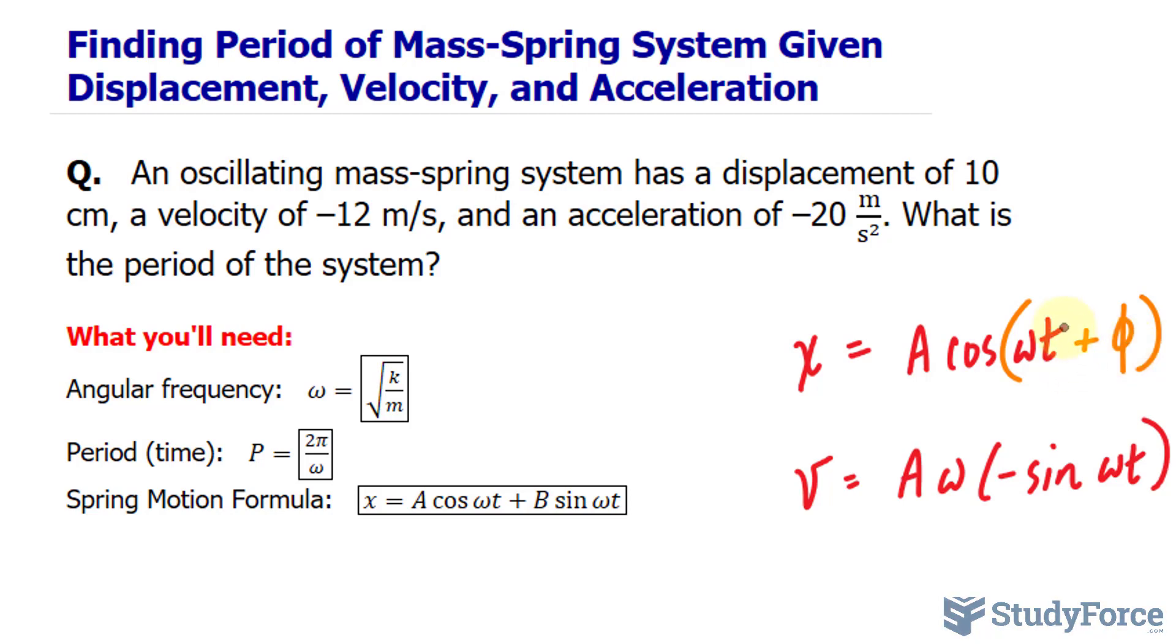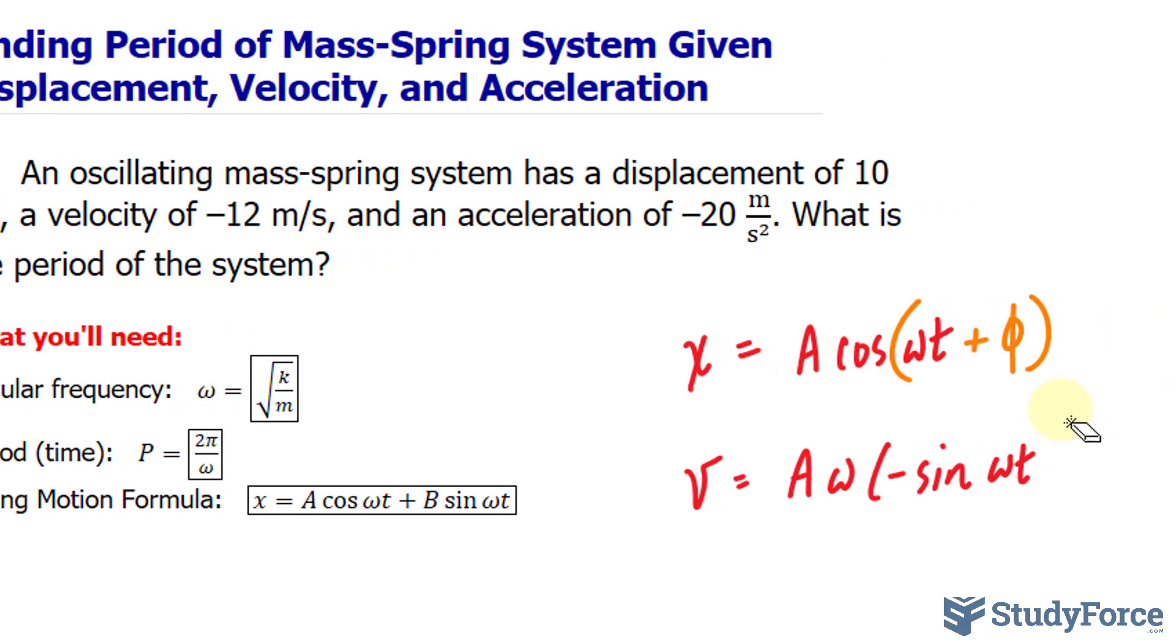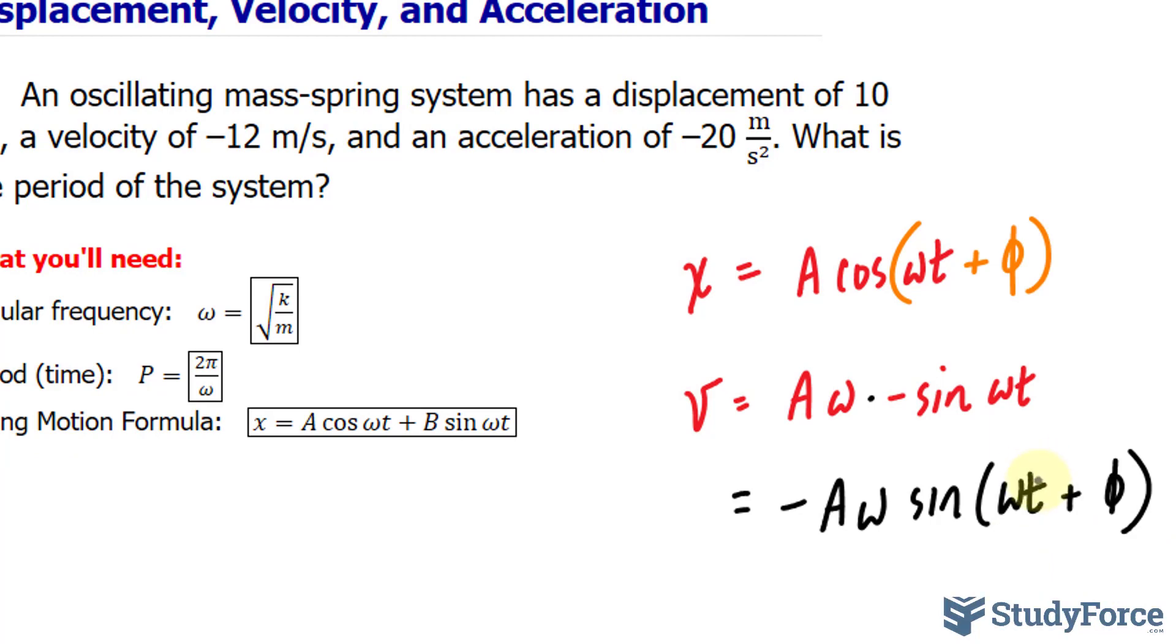If we go ahead and take the derivative of this new function, given that it now has a phase angle, our derivative will look very much the same. Let me rearrange things. This negative is a factor, so I'll write down negative A omega sine omega t plus the phase angle. This function, even if we place t is equal to zero, depending on the phase angle, can still give us an output that is negative 12.